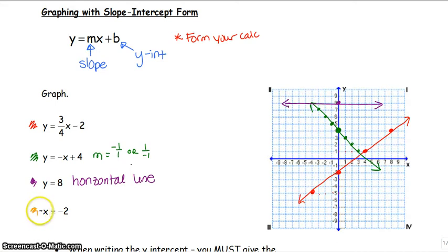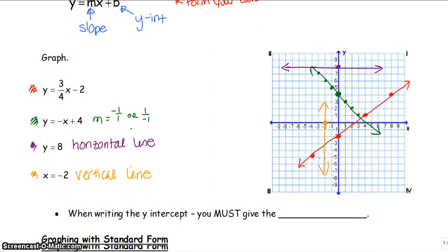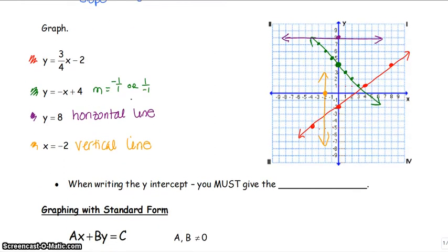And our last one, x equals negative 2. We go to the x-axis, find negative 2, and then we draw the opposite direction of the axis that we're on. And all x equals lines are going to be vertical lines. Alright, so slope-intercept form, you are good. That's a quick review.